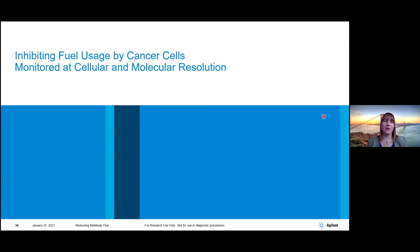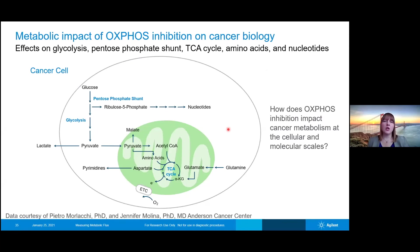I did want to get to this last example of inhibiting fuel usage by cancer cells and looking at this again with the cellular and molecular resolution. In this particular example, we're going to take a look at cancer cells, specifically looking at the inhibition of oxidative phosphorylation and what this does to metabolic pathways within the cells. This data comes from Pietro Morlocki and Jennifer Molina, who completed the studies at the MD Anderson Cancer Center.